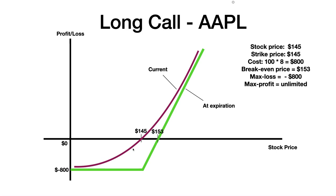The gap between the expiration and current payoff diagrams is due to time value. As we discussed, the option premium includes extrinsic value — time value and implied volatility. Because the purple diagram represents right now, we still have time remaining before expiration, so we have time value (theta) and implied volatility. That's why the current payoff graph has a more gentle gradient. As expiration nears, the current payoff diagram will slowly move closer and closer to the expiration payoff diagram.